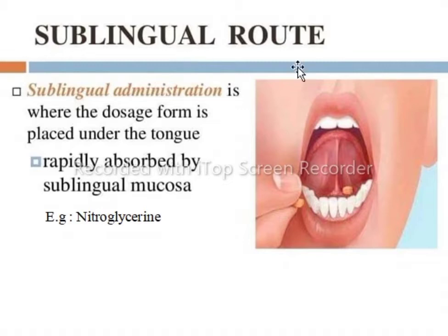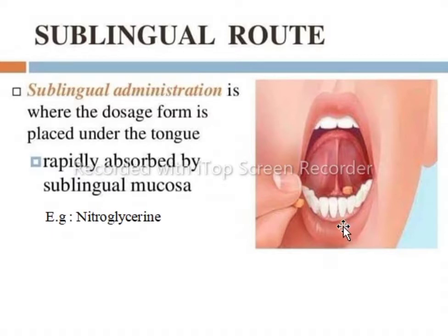Then we have the sublingual route of drug administration. In this route, the drug is placed under the tongue, where it is rapidly absorbed by capillaries. An example is nitroglycerin or angised, which has quick action in angina pectoris. Some antihypertensive drugs can also be used by this route, such as captopril tablets.